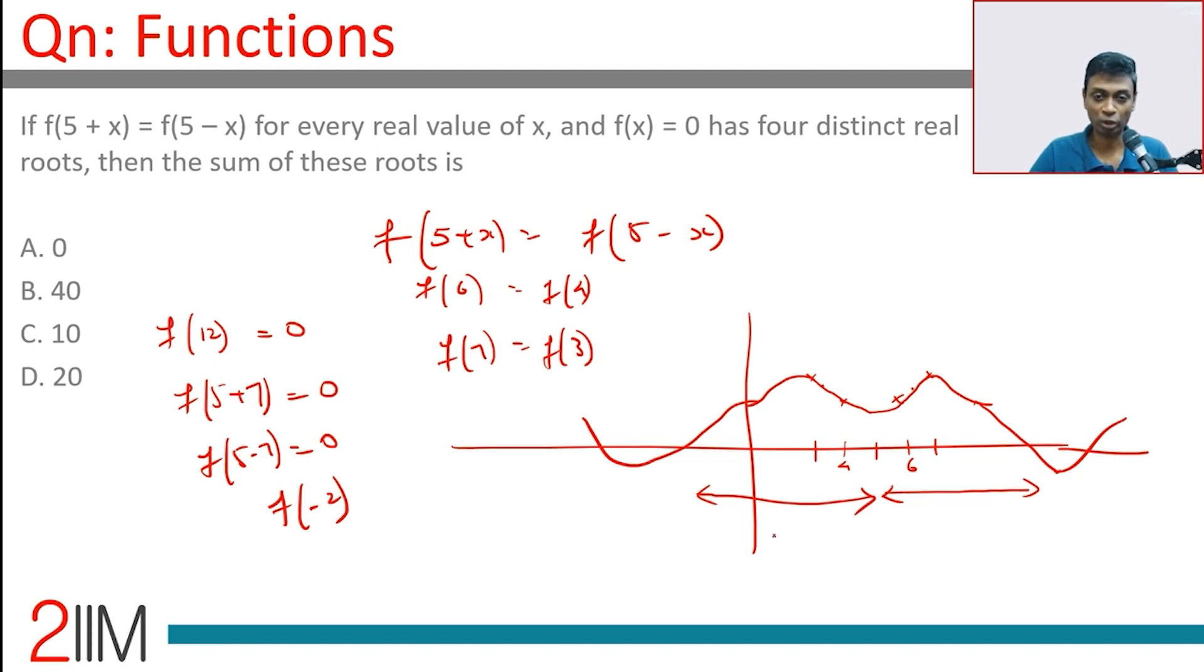From 5, if you move some number of units to get a root, you should move the same number of units this side to get another root. Now we are on to something. So navigating from 5, this side if there is a root, that side there is a root.